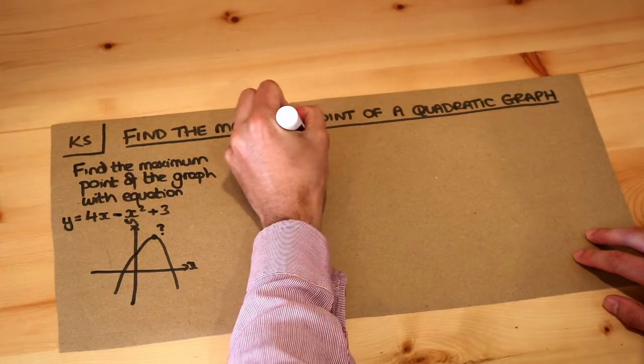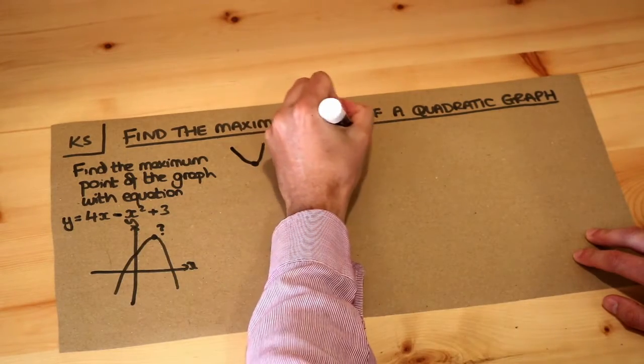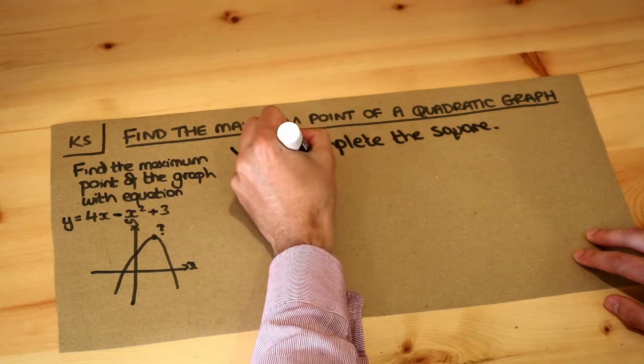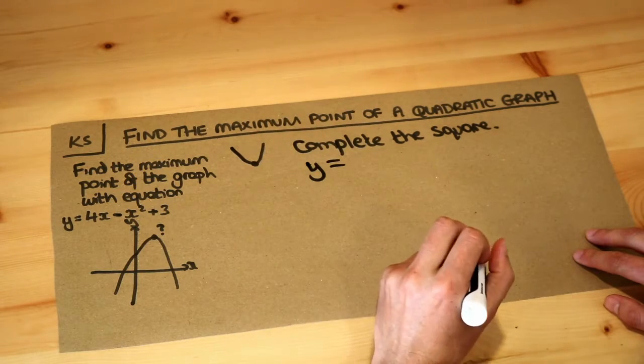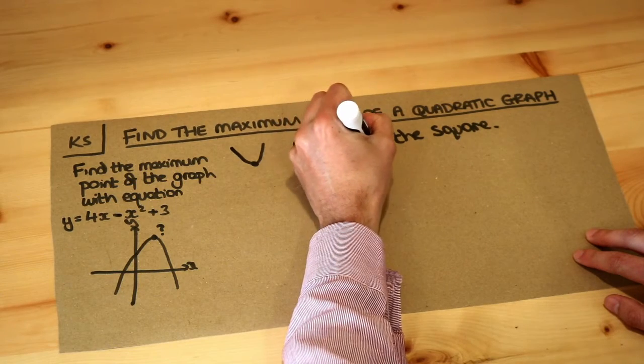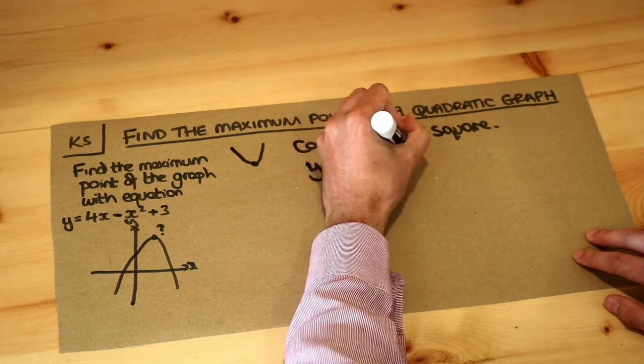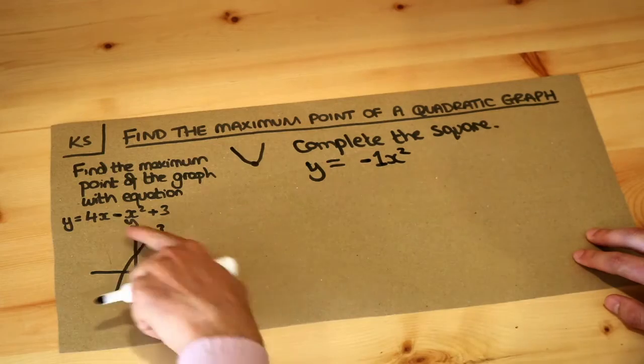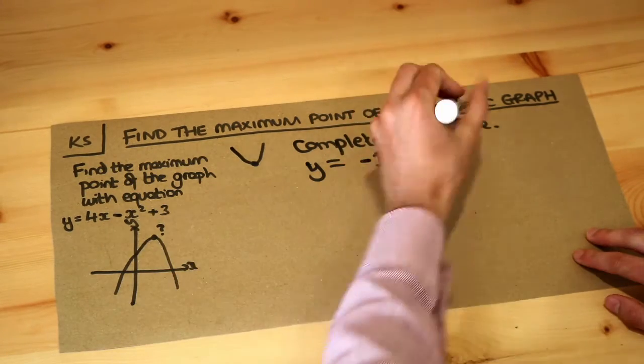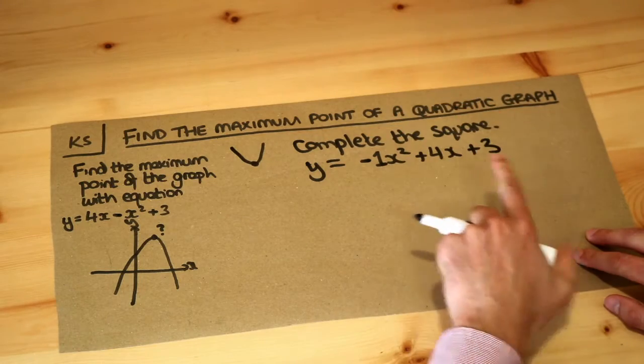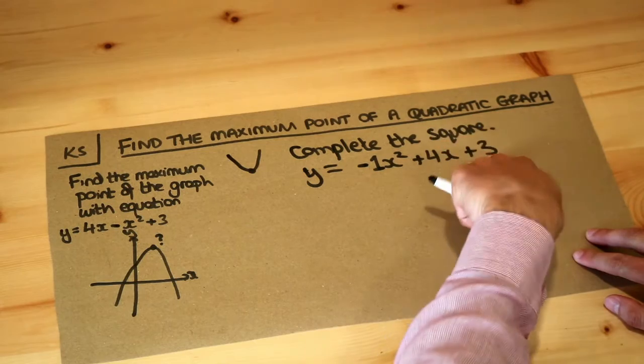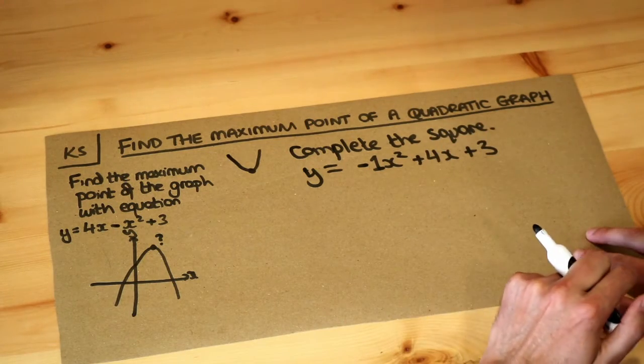We're still going to do the same thing to find the maximum point. We're going to complete the square. So if we just write out this equation again, we should write it such that the x squared term is first. So we've got minus x squared, or let's just say minus 1x squared, so the number on the front of the x squared is clear. Then we put the x term, so plus 4x and plus 3. That should be your first step to put the terms in order so you have x squared first, then x, then the constant term, which is the term without the x.